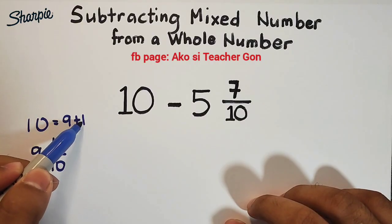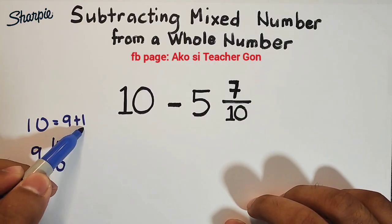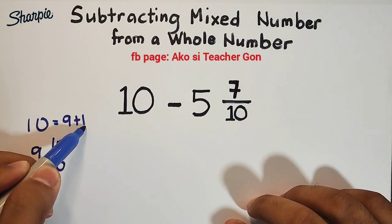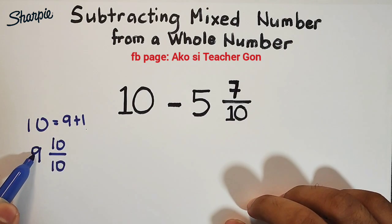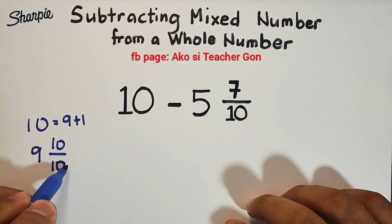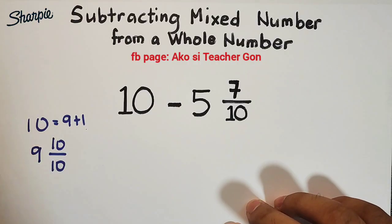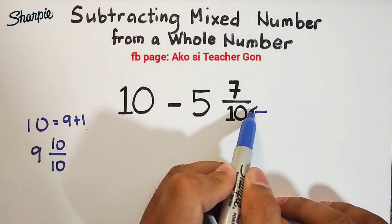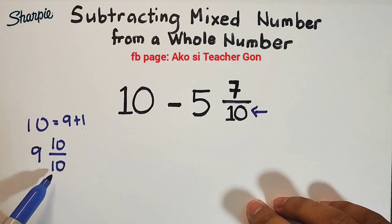Your 1 is a whole number and we express 1 as a fraction. Remember, 10 over 10 is the same as equal to 1. So 9 and 10 over 10 is also equal to 10—hindi natin binago yung value ng 10 because that is still equal to 9 and 10 over 10. So why do I choose 10 over 10? It is simply because of this denominator—dapat pareha sila ng denominator. 10 over 10.